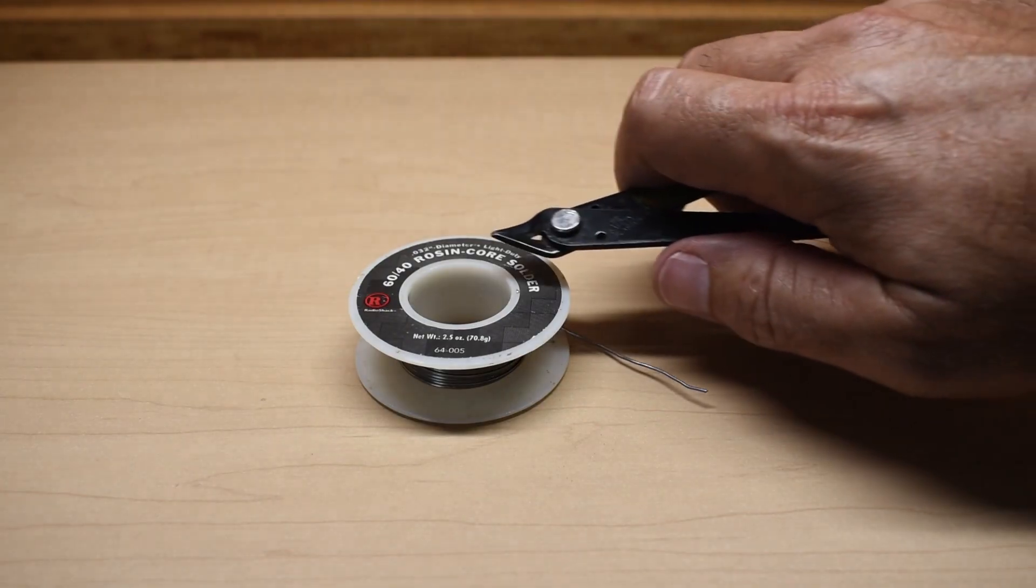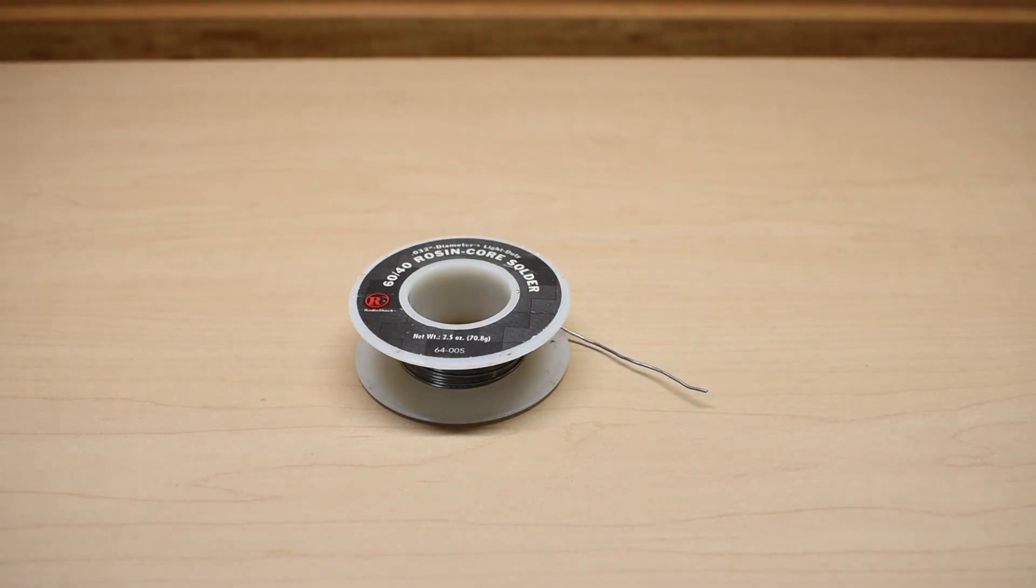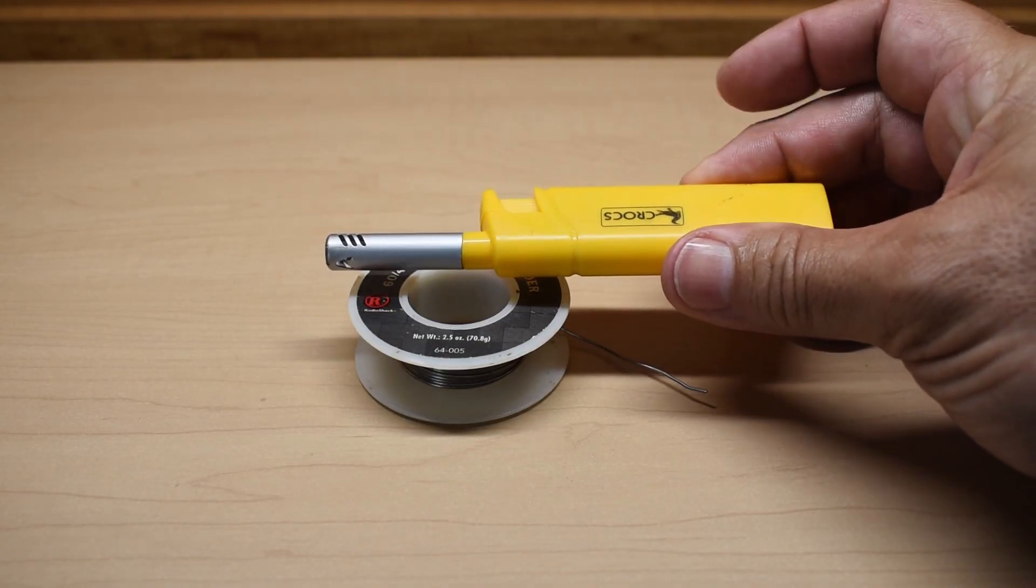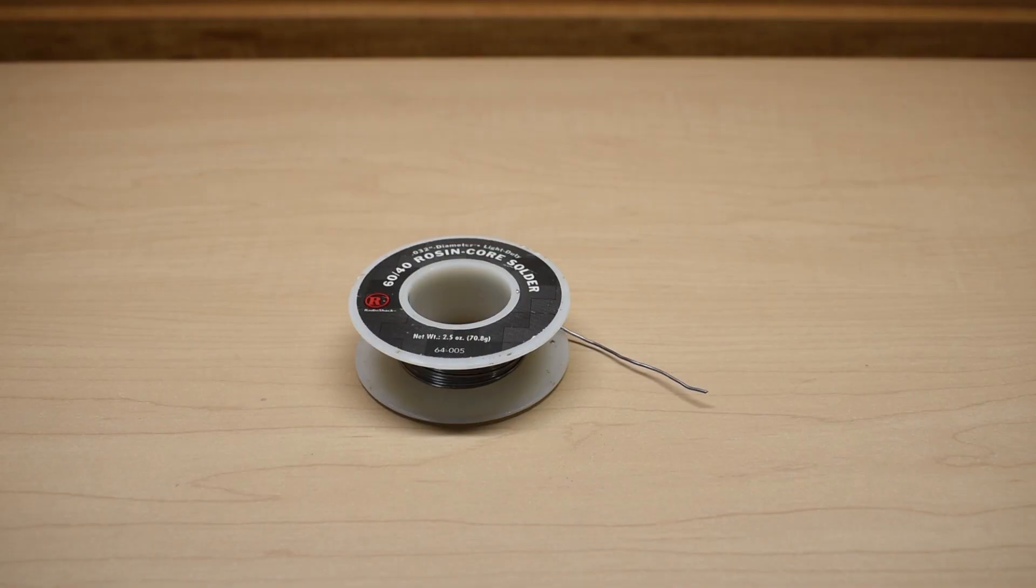Besides a small flush cutter like you see right here, you're also going to need a lighter. I picked this one up at the dollar store. It's perfect. It has that long end that sticks out. Alright, so let me show you what you have to do.